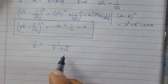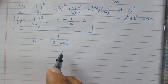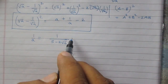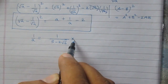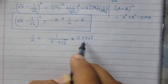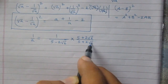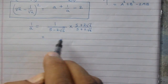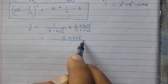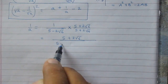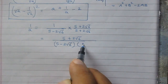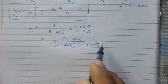This is a fraction with an irrational denominator, and we need to rationalize it. In order to rationalize, we will multiply both the numerator and denominator by 5 plus twice of square root 6. After doing so, we get 5 plus twice of square root 6 in the numerator, and in the denominator we have the product of 5 minus twice of square root 6 and 5 plus twice of square root 6.